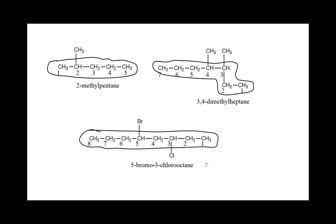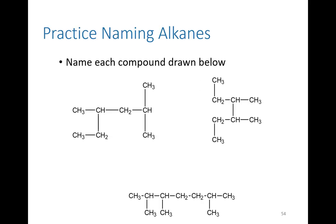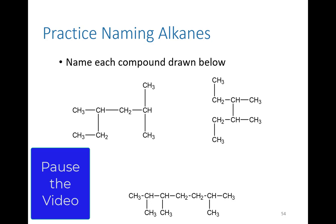Let's do some more practice. Here are three additional compounds. Remember to go in order: first find the longest chain of carbon atoms and circle it, then number it so the first substituent gets the lowest number possible. Then identify the substituents, place them alphabetically at the beginning of the name, use di- or tri- if there are multiples, put the carbon numbers in front, and follow the grammar rules from rule six. Please pause the video and try, then come back to check your work.